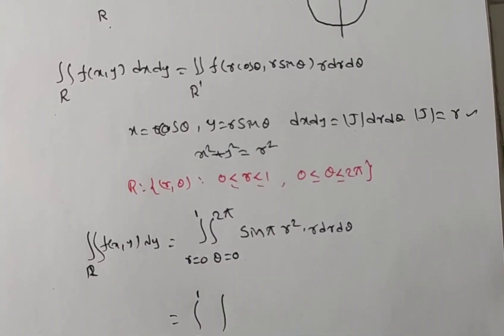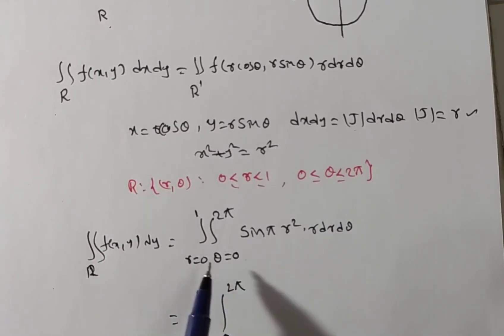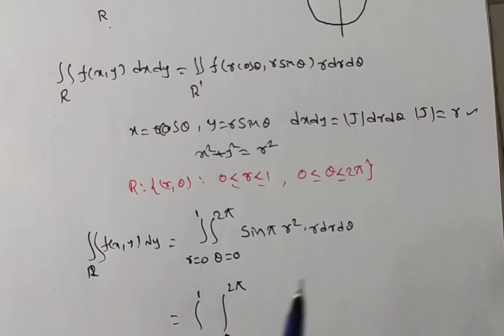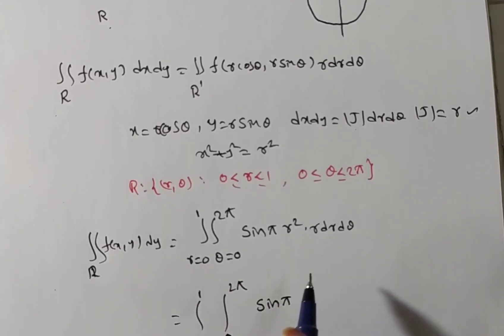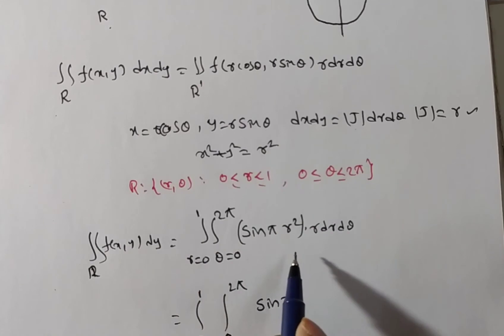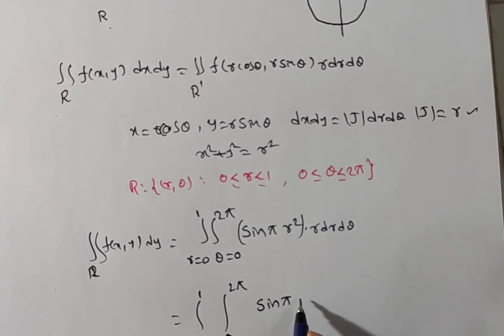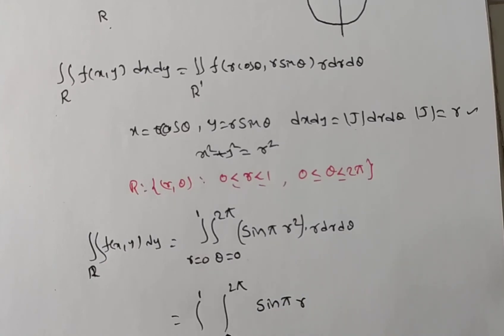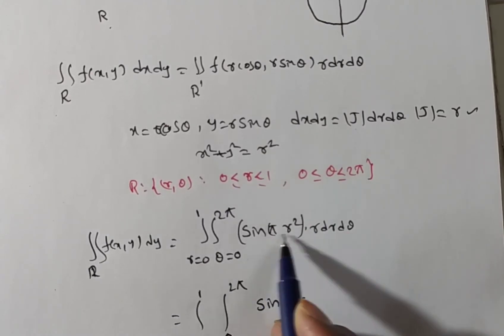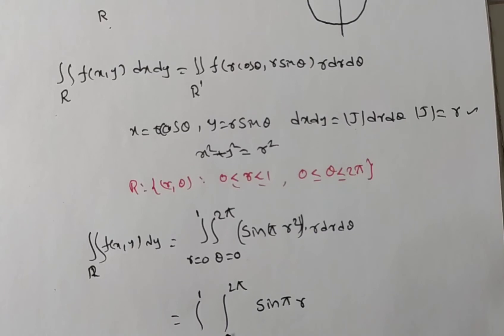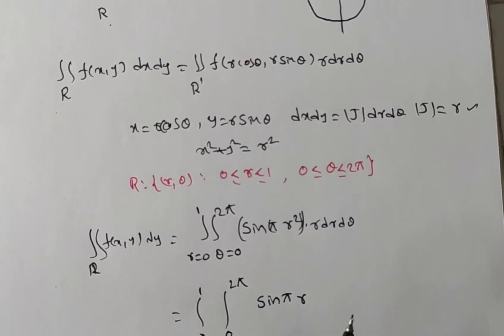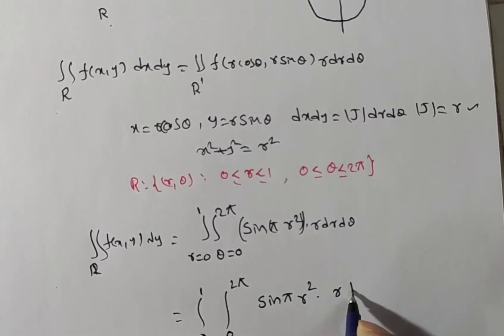We now evaluate the integral from 0 to 1 (in r) and 0 to 2π (in θ). These two limits are independent, so we can choose the order of integration. Since the integrand involves only r, we integrate with respect to r first. The integrand is sin(πr²) · r dr dθ.